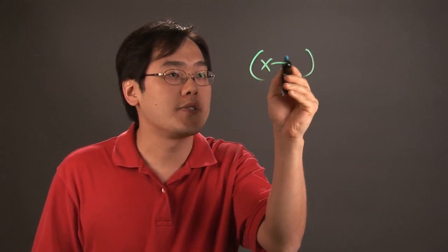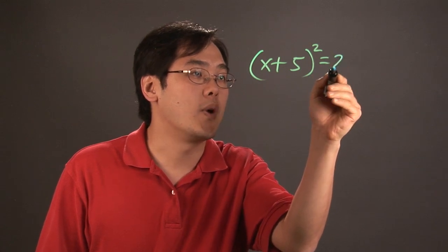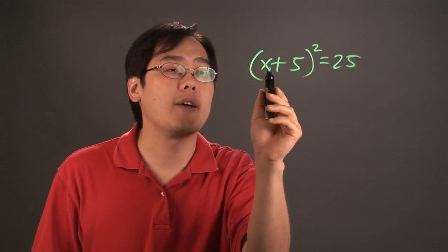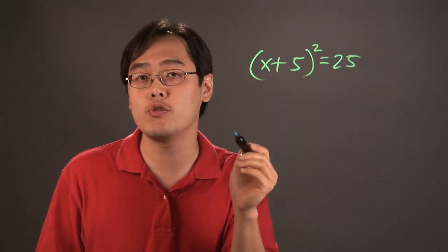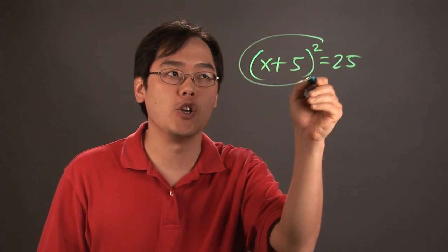So for example, one thing you want to consider is if you have (x + 5)² = 25. Now this is a binomial square because binomial means you have two terms, a two-term polynomial, and it's being squared. So this is an example of a binomial square.